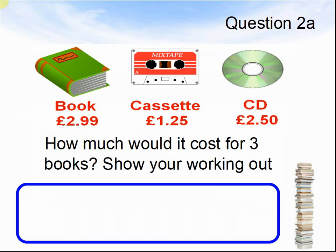Question 2a. You have a choice of a book for £2.99, a cassette for £1.25 and a CD for £2.50. How much would it cost for three books? Show your working out. Pause the video until you are ready for the next question.